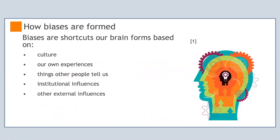When faced with situations or people, we use mental maps and patterns to classify them by making a number of automatic associations. Not surprisingly, our perceptions and assumptions based on these automatic associations are not always correct. Unconscious biases tend to be ingrained and it takes work to break them down. However, this can be done through active reflection and inclusive behavior.